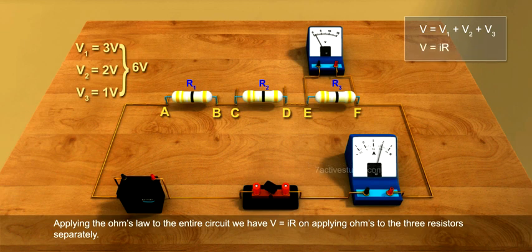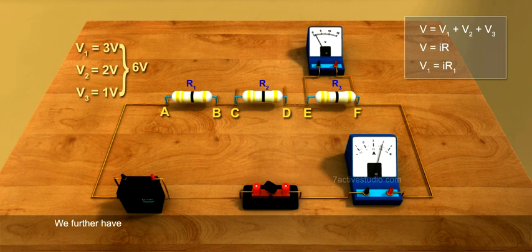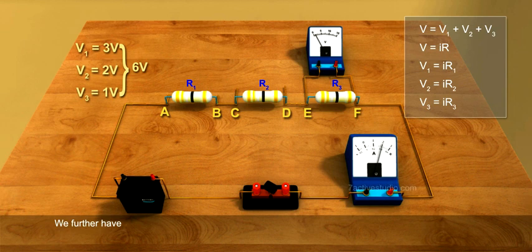equals IR. On applying Ohm's law to the three resistors separately, we further have V1 equals IR1, V2 equals IR2, and V3 equals IR3.